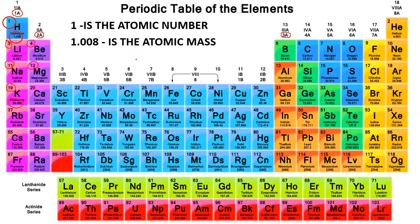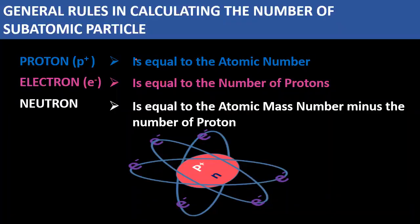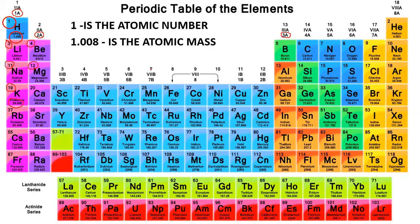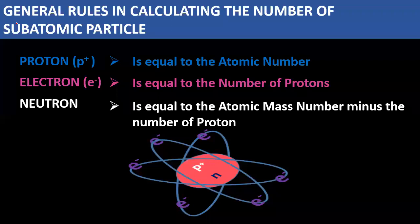So here are the general rules for calculating the number of subatomic particles. How do we get the number of protons? How do we get the number of electrons? And how do we get the number of neutrons? For protons — the positively charged subatomic particles — the number of protons is equal to the atomic number. For hydrogen, the atomic number is 1, so the number of protons is also 1.